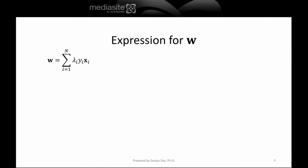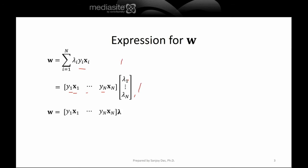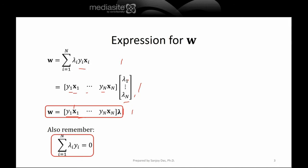From the previous slide, W equals summation Lambda_i Y_i X_i. This can be written in matrix form: collecting all the Lambdas into a vector Lambda, we get W as a row-matrix times a column vector. This matrix contains terms Y_1 X_1, Y_2 X_2, and so on through Y_N X_N — note this is actually a matrix since each X_i is a column vector. We also remember that summation Lambda_i Y_i equals 0. These two expressions are important for the derivation.